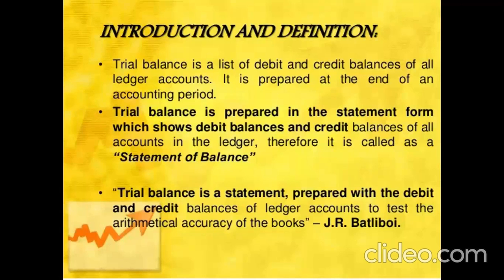When ledgers are prepared, there will be either a debit or a credit balance. A debit balance means the debit side of that particular account is greater and the difference is placed on the credit side, but it will be transferred to the debit side of the trial balance. Similarly, a credit balance means the credit side amount is more and the difference is on the debit side, which will be transferred to the credit side of the trial balance.